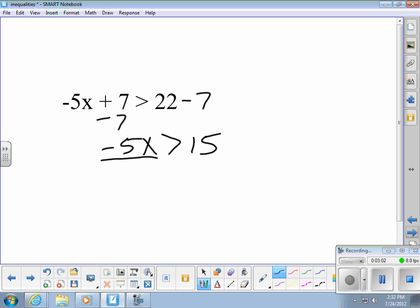So, we could divide each side by negative 5. When I divide by a negative, the inequality sign flips. So, we know it's going to be less than. So, x is less than negative 3.